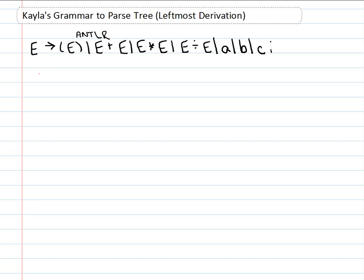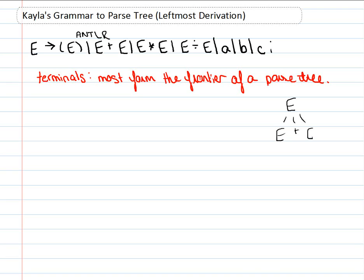And the terminals must form the frontier of a parse tree. So the frontier of a parse tree is what occurs at the very ends, like the leaf nodes basically here. So this is the frontier, and we see these are all terminals. So how do I know these are terminals?